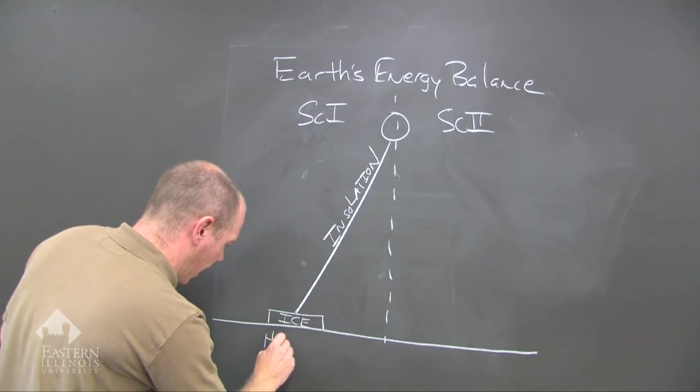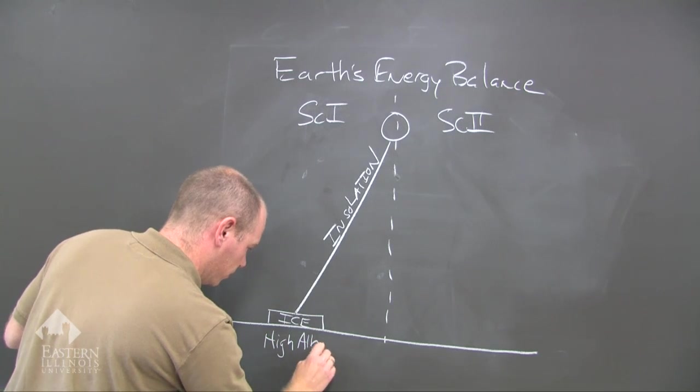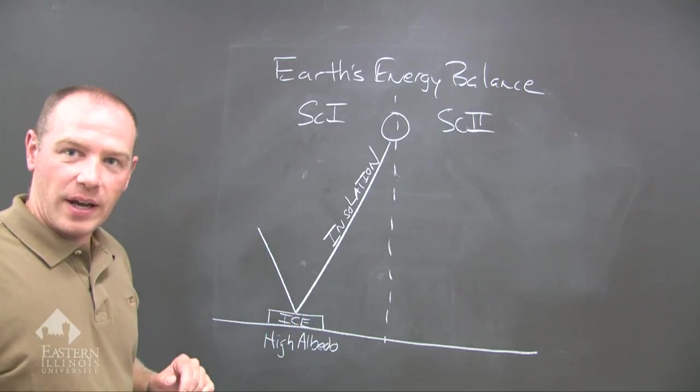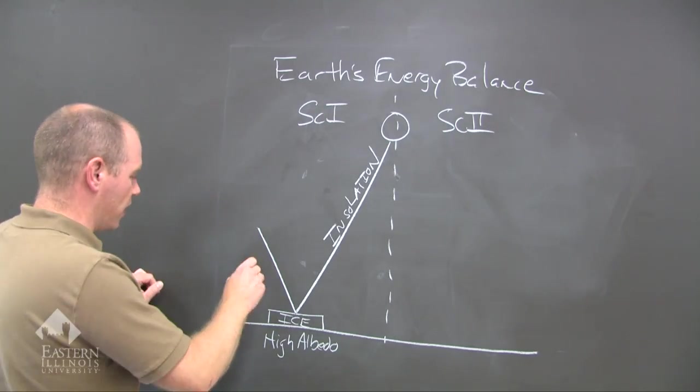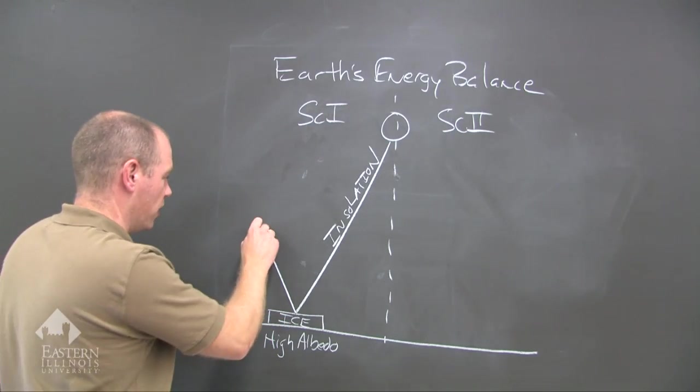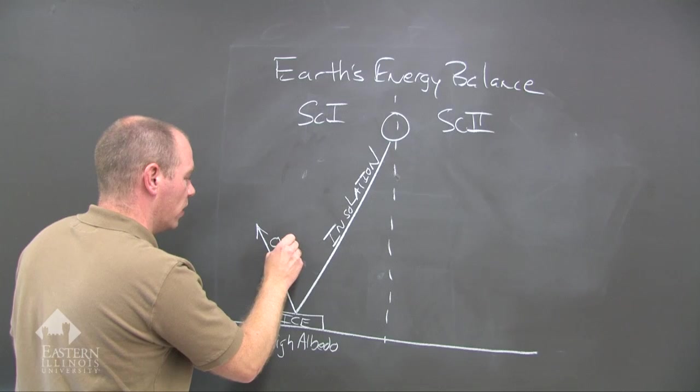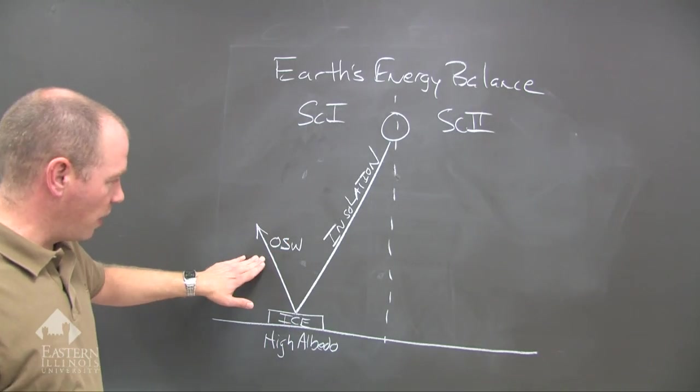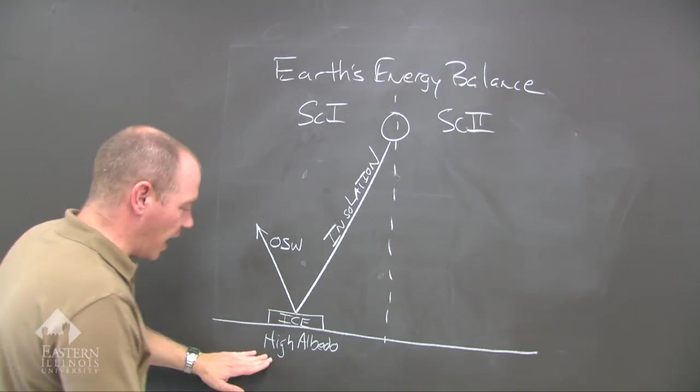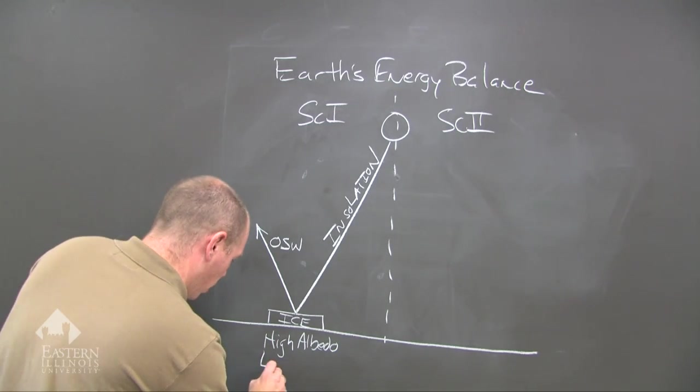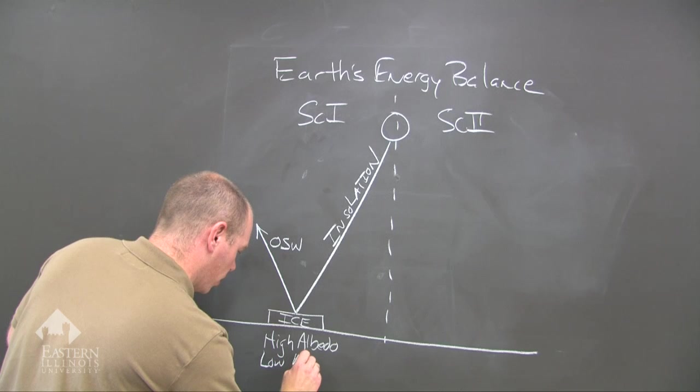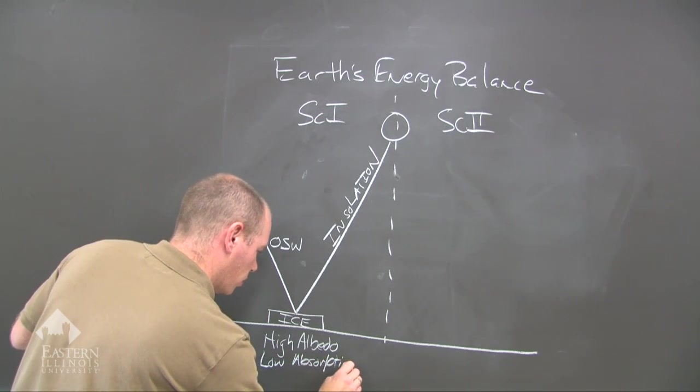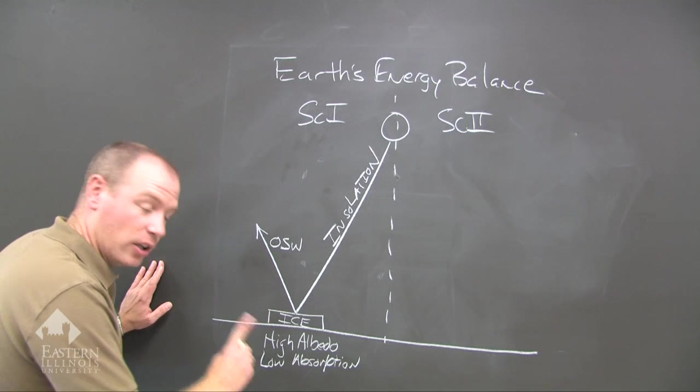What happens when you have ice and insolation hits it? Well, you have a high albedo and that reflects, that radiation reflects off the surface, the high albedo surface. And so we have outgoing shortwave radiation. Outgoing shortwave radiation. Therefore, there is high albedo, low absorption, and a low temperature.